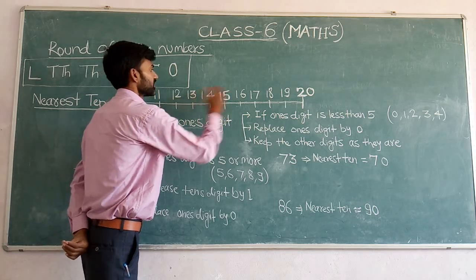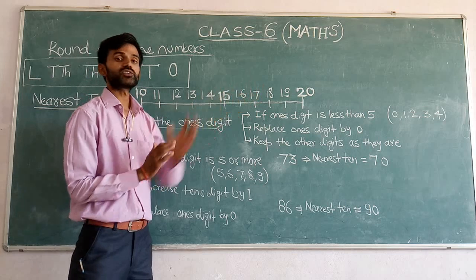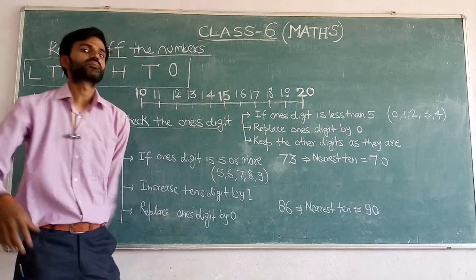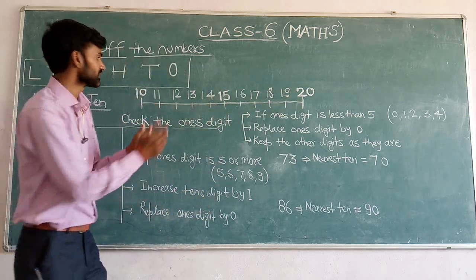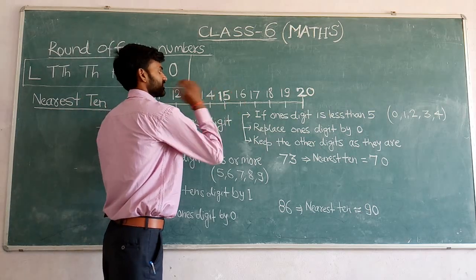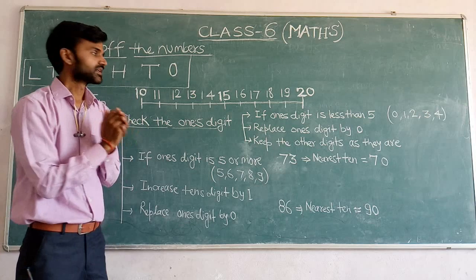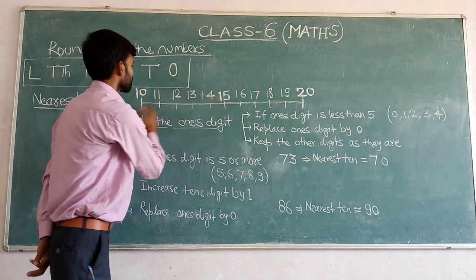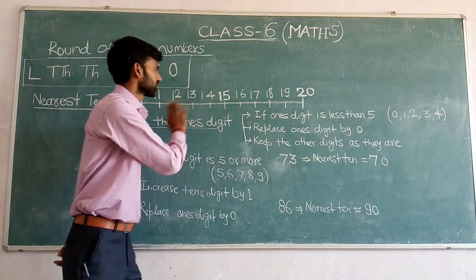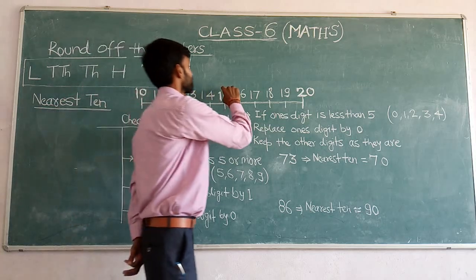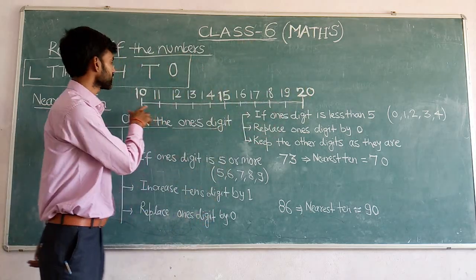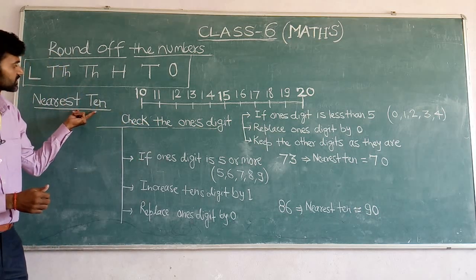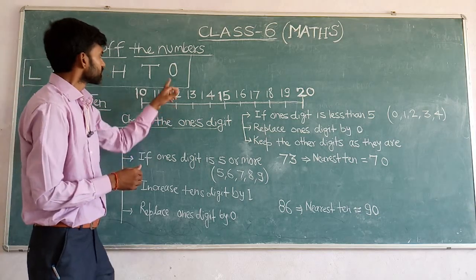15 is the nearest to both tens — 10 and 20. But when we find the nearest value of 15, it is always counted to the next ten, not the previous one. So the nearest value of 15 is 20, not 10. There are some rules for rounding out the numbers.